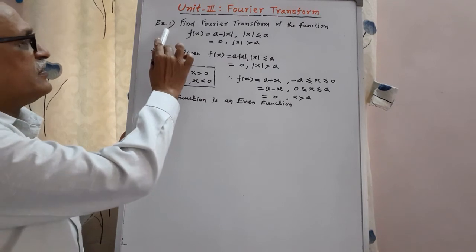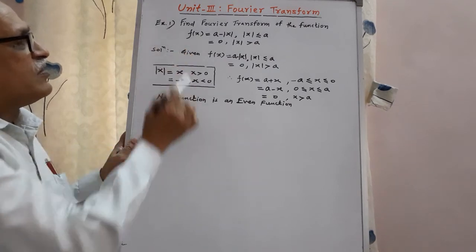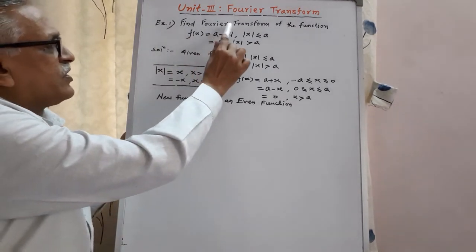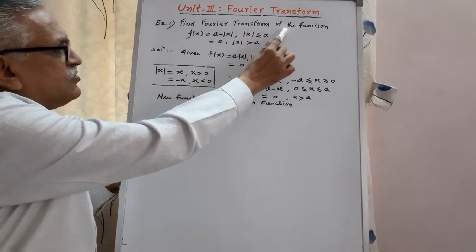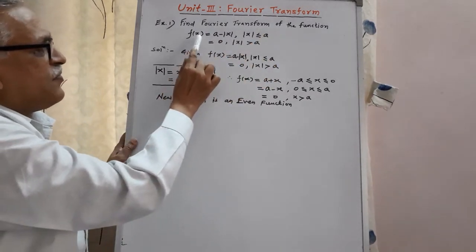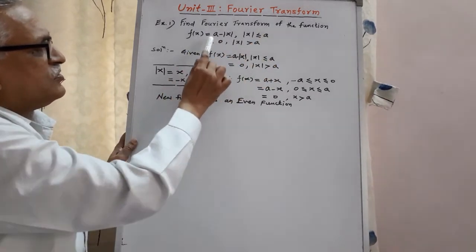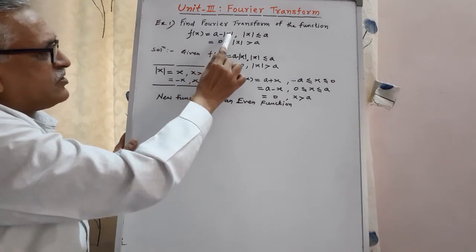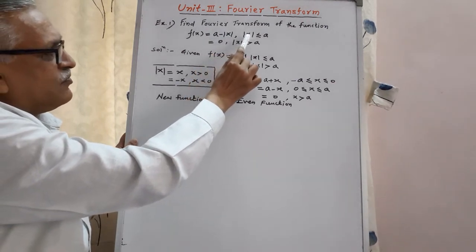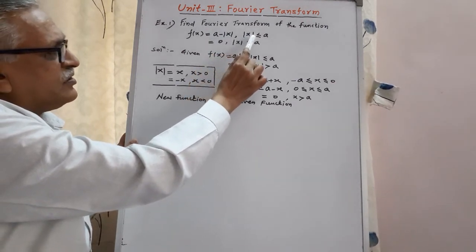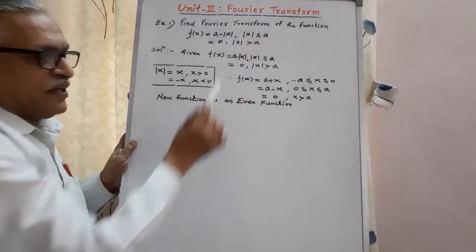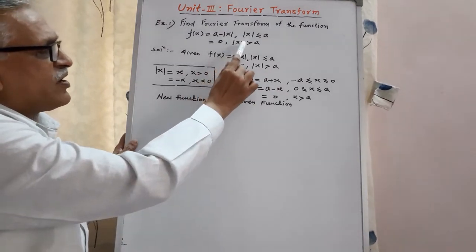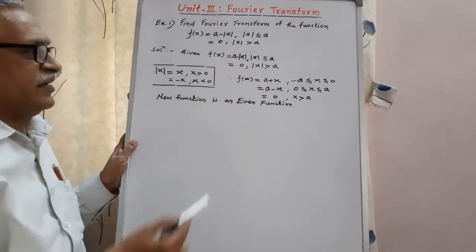Let us see one more example. Find Fourier transform of the function f of x, which has two values: a minus mod x for the condition mod x less than or equals to a, and 0 for mod x greater than a.